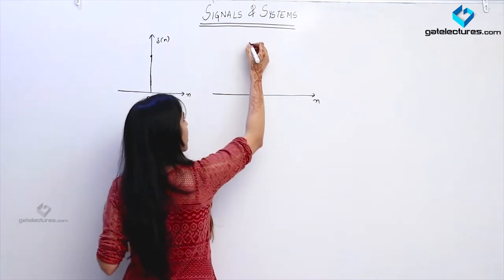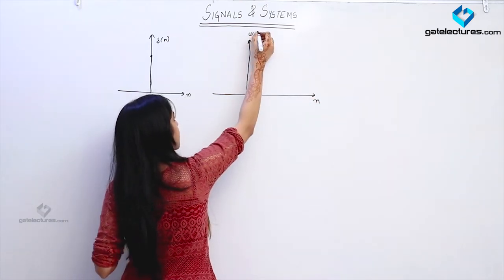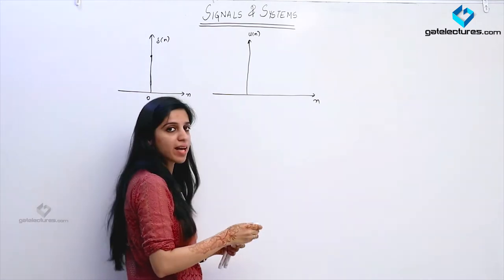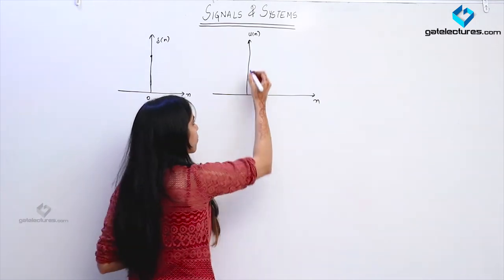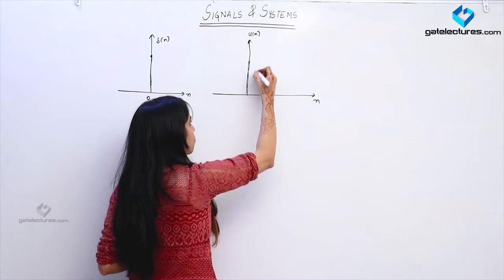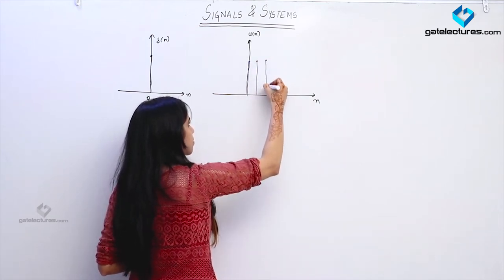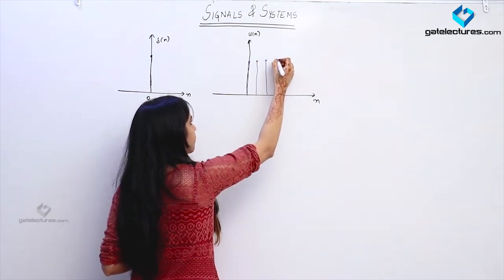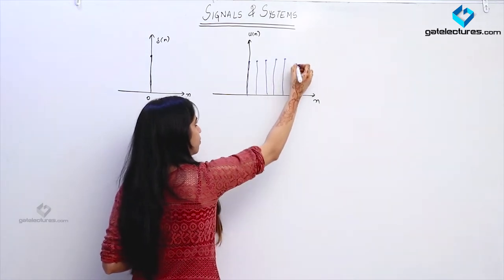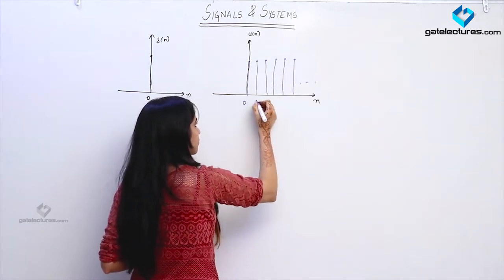Unit step is defined for all values of n greater than or equal to 0, and it occurs with the value of 1. This is how the unit step signal is going to look like.